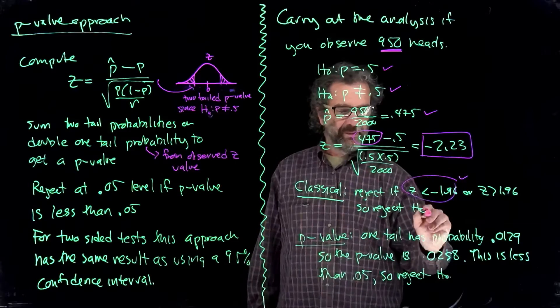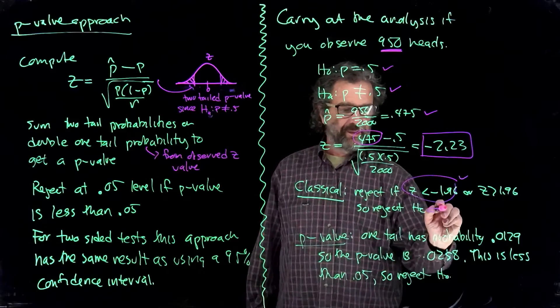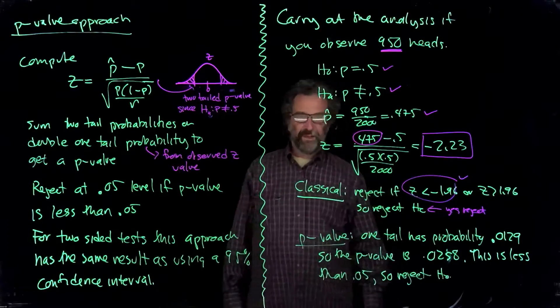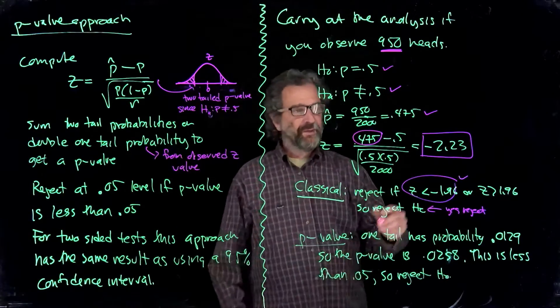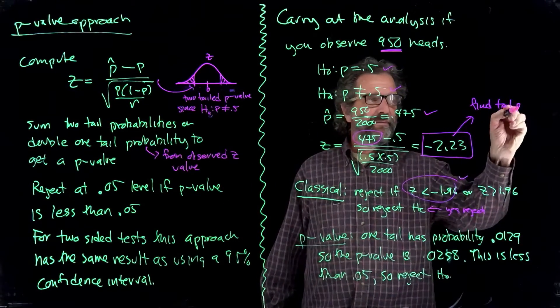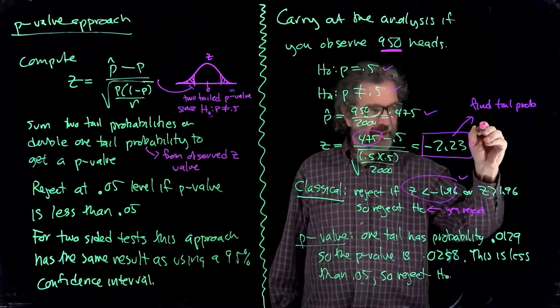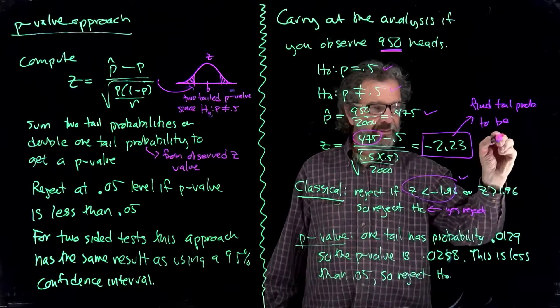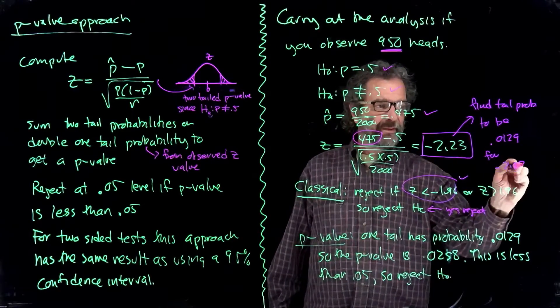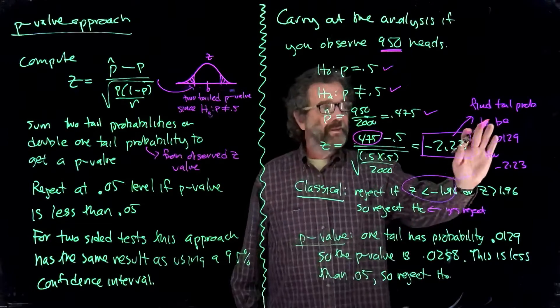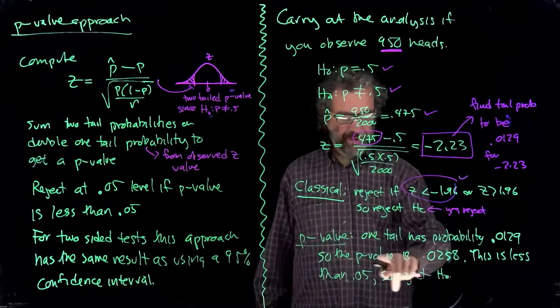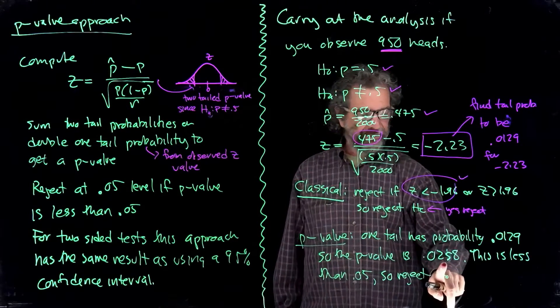It's this one. Yes, it is. So reject. Yes, reject. So that's the classical approach. And the p-value approach says we'll take this z-value. We'll find the tail probability. It turns out, go to the tables, 0.0129 for minus 2.25. And since this is a two-sided test, we're going to double that probability. So the p-value is actually twice that number, 0.0258.